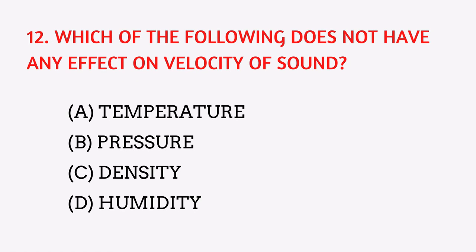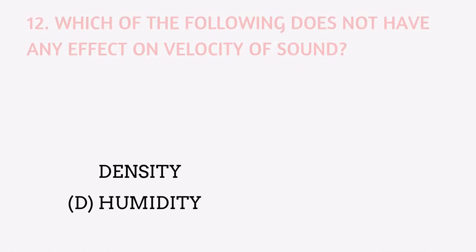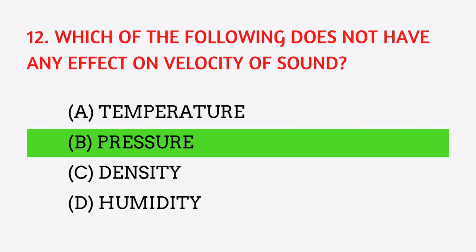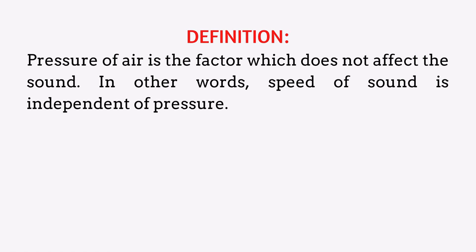Which of the following does not have any effect on the velocity of sound? The answer is pressure. Pressure of air is the factor which does not affect the speed of sound; in other words, the speed of sound is independent of pressure.